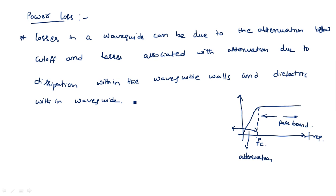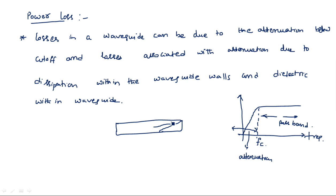Losses are also associated with attenuation due to power dissipation within the waveguide walls and dielectric within the waveguide. Sometimes different types of dielectric materials are kept within the waveguide — for example, a match termination has material to collect the entire signal passing through, so the signal going inside is not reflected back but is attenuated. If any unnecessary dielectric material is added inside the transmission line, there will be a power loss.